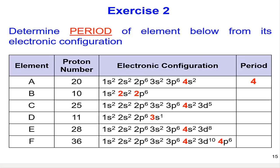The same rules apply to element B. The electronic configuration of B is 1s² 2s² 2p⁶, and the highest N value here is 2. Therefore, B is in period 2.